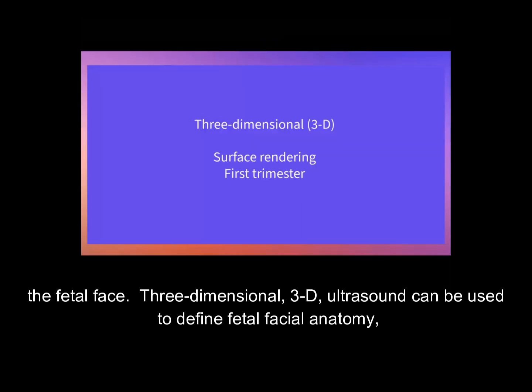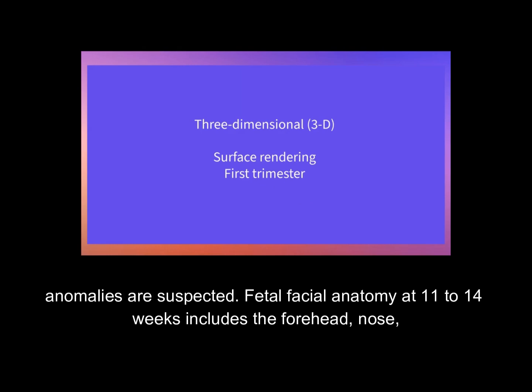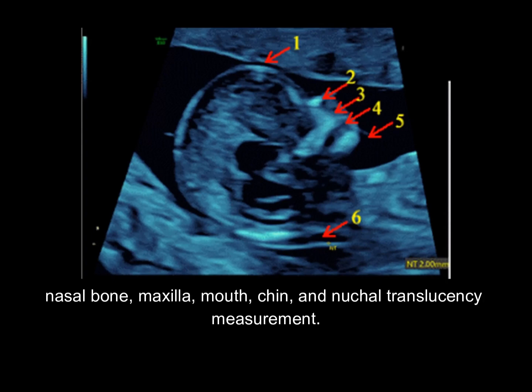Three-dimensional (3D) ultrasound can be used to define fetal facial anatomy, and surface rendering with 3D ultrasound may be applied during the first trimester when fetal anomalies are suspected. Fetal facial anatomy at 11 to 14 weeks includes the forehead, nose, nasal bone, maxilla, mouth, chin, and nuchal translucency measurement.